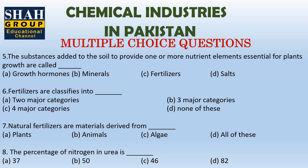The substance added to the soil to provide one or more nutrients — elements essential for plant growth — are called fertilizers, which increase the fertility of soil. Fertilizers are classified into two major groups: nitrogenous fertilizer and phosphatic fertilizer.